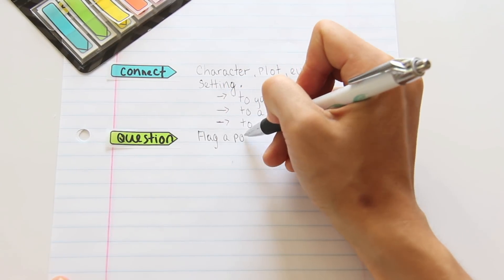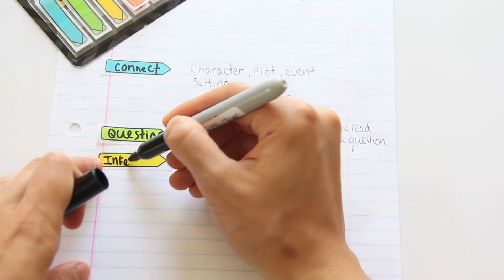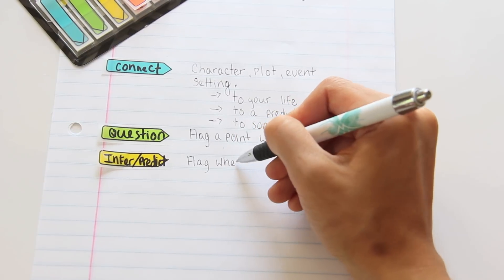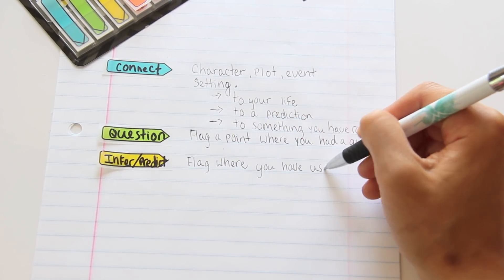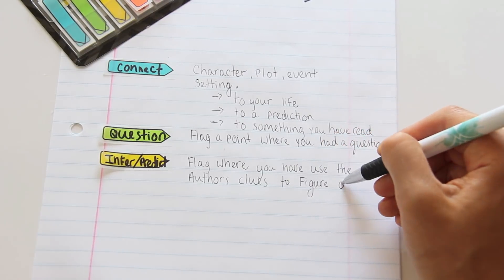Then you need to question them. So flag a point where you might have a question. We're always trying to figure things out in stories, right? So when you think something is important, the author makes a good suggestion. Flag it so that way you remember to go back to it when it's time to study.